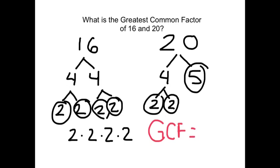So, 16 is 2 times 2 times 2 times 2. 20 is 2 times 2 times 5, and we see that they both have a 2 in common. So, I write that down. I see that they also have another 2 in common. So, I write 2 times 2,